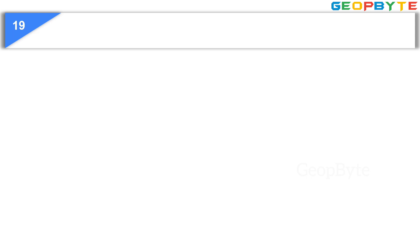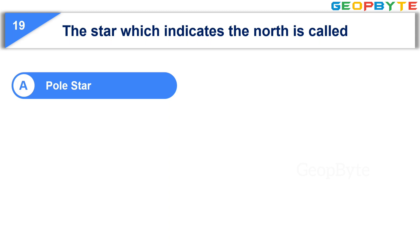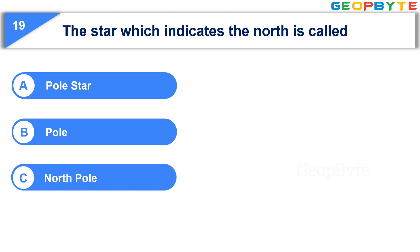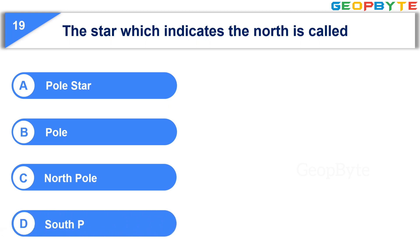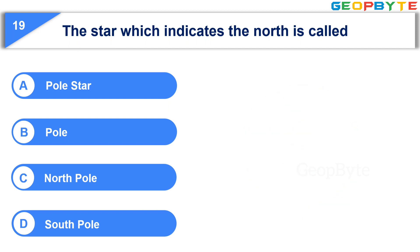Now let us see the 19th question: The star which indicates the north is called — Option A: Pole star. Option B: Pole. Option C: North pole. Option D: South pole. Your time starts now. Your time is up and the correct answer is Option A: Pole star.